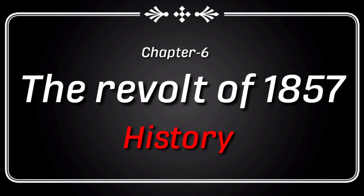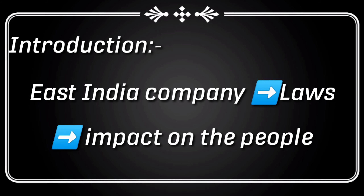Hello students, today we will read chapter 6 of your history book, The Revolt of 1857. But first I give you an introduction on how the East India Company established themselves as the supreme political power in India, and then how they made laws and policies which affected different people like kings, queens, peasants, landlords, etc. Then what was the impact of these policies and laws on the people?